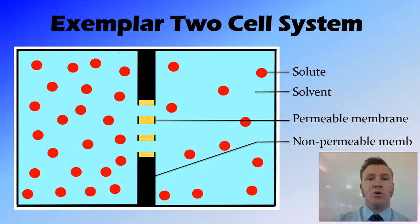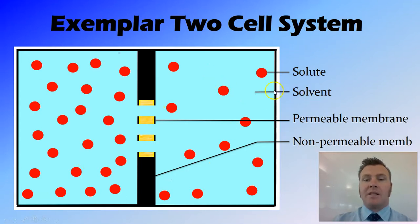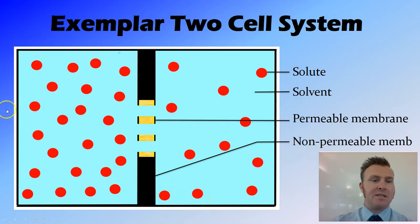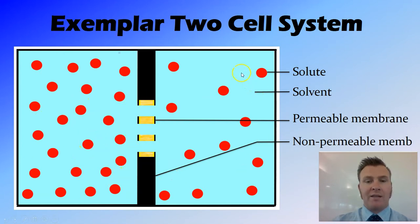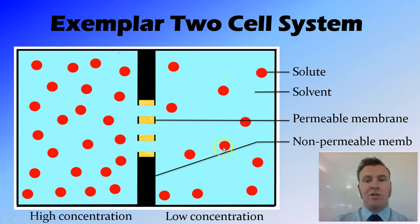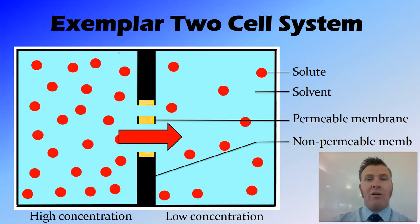I want to introduce this two-cell system that I'm going to use to explain these concepts. You can see there's one cell here and one cell there, and both of those cells have a solution in them of a solvent and a solute. We have a permeable membrane here and a non-permeable membrane there. The permeable membrane allows both solvent and solute to move across, while the non-permeable membrane blocks both — think of that as a wall. To start with, this cell has more solute than the other, but the same amount of solvent, so this is a high concentration while that is a low concentration. Therefore, diffusion will move from high concentration to low concentration, and we'll look at how the rate of diffusion — the speed of movement of the solute — can be changed.